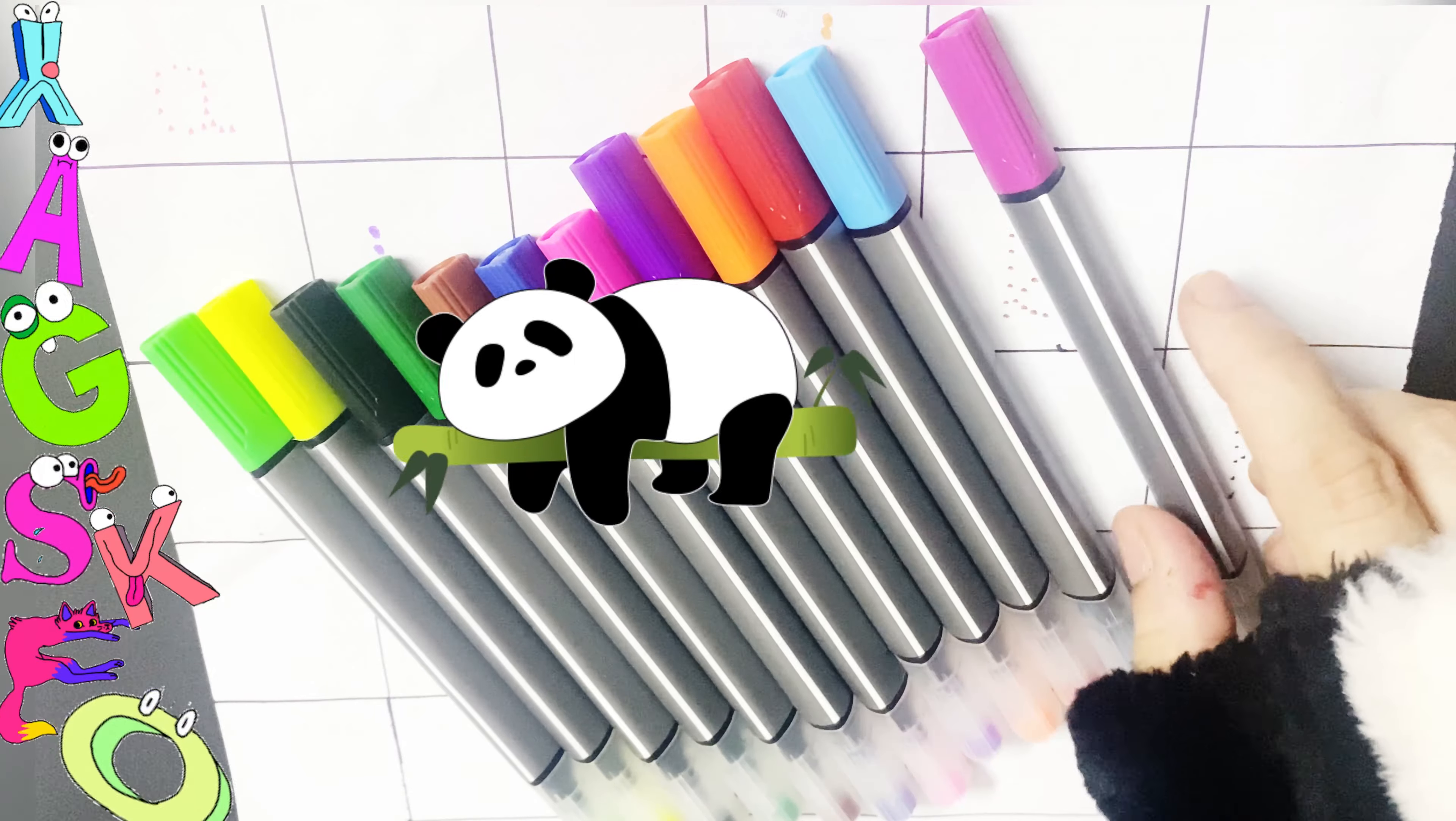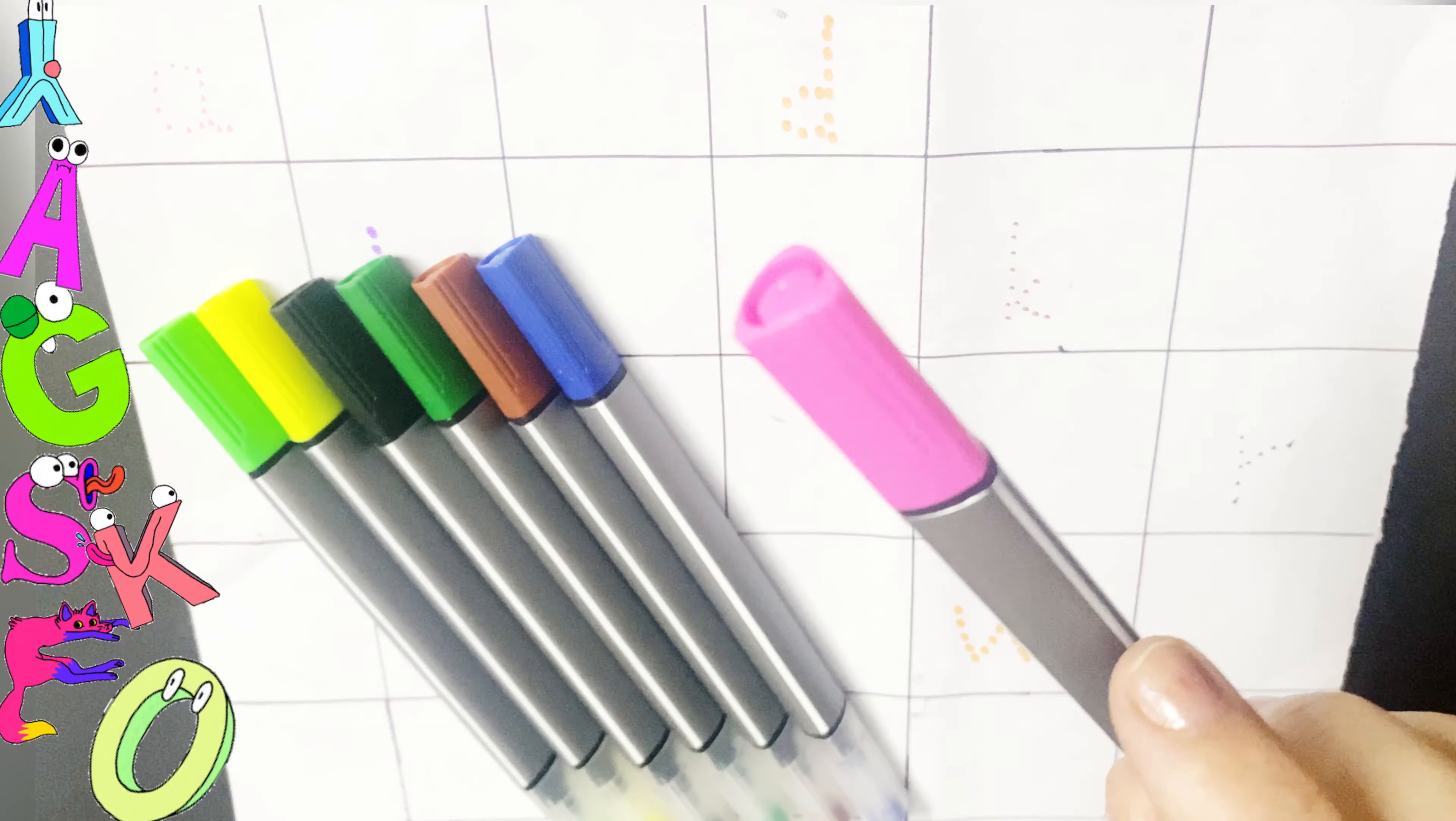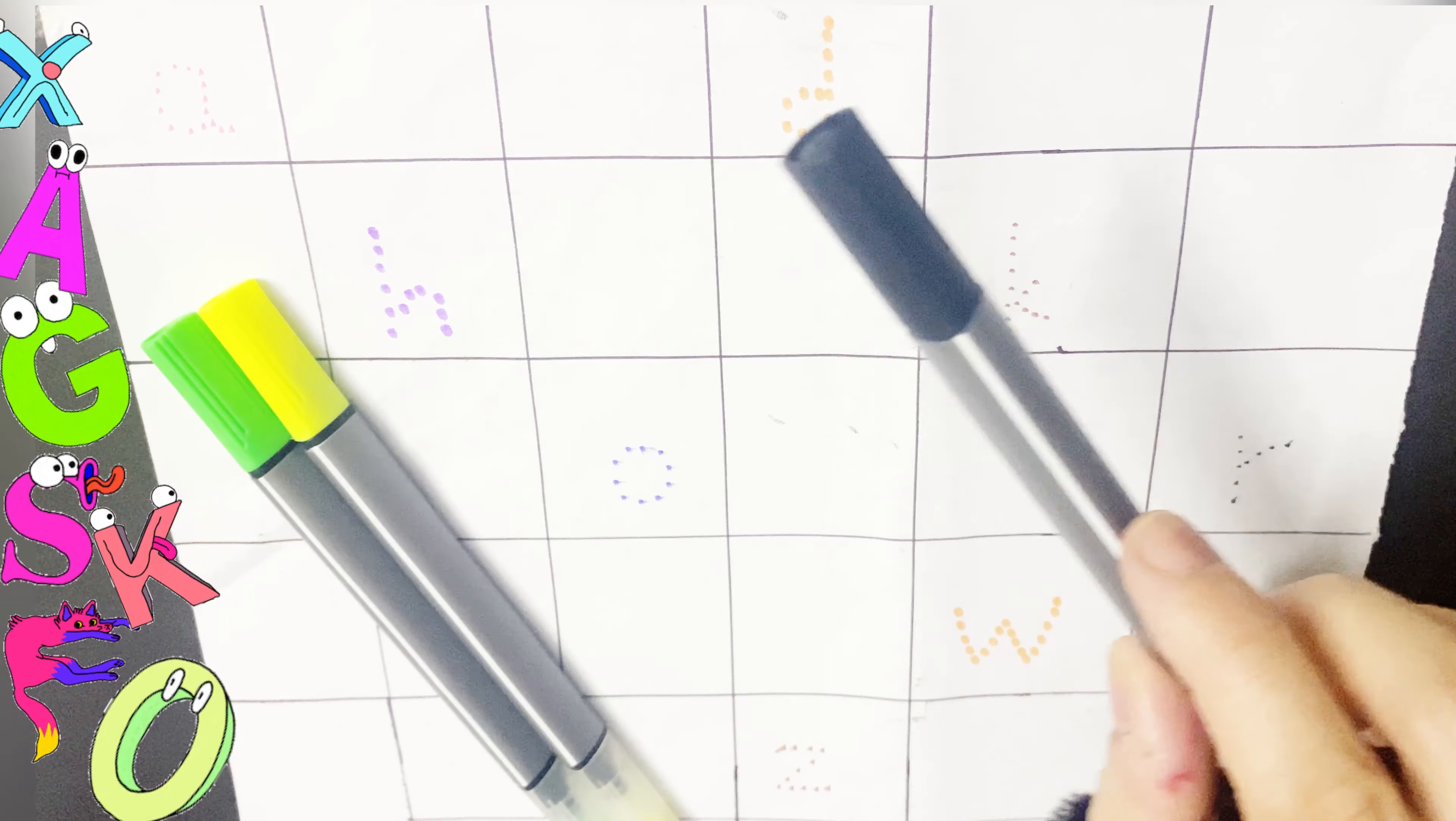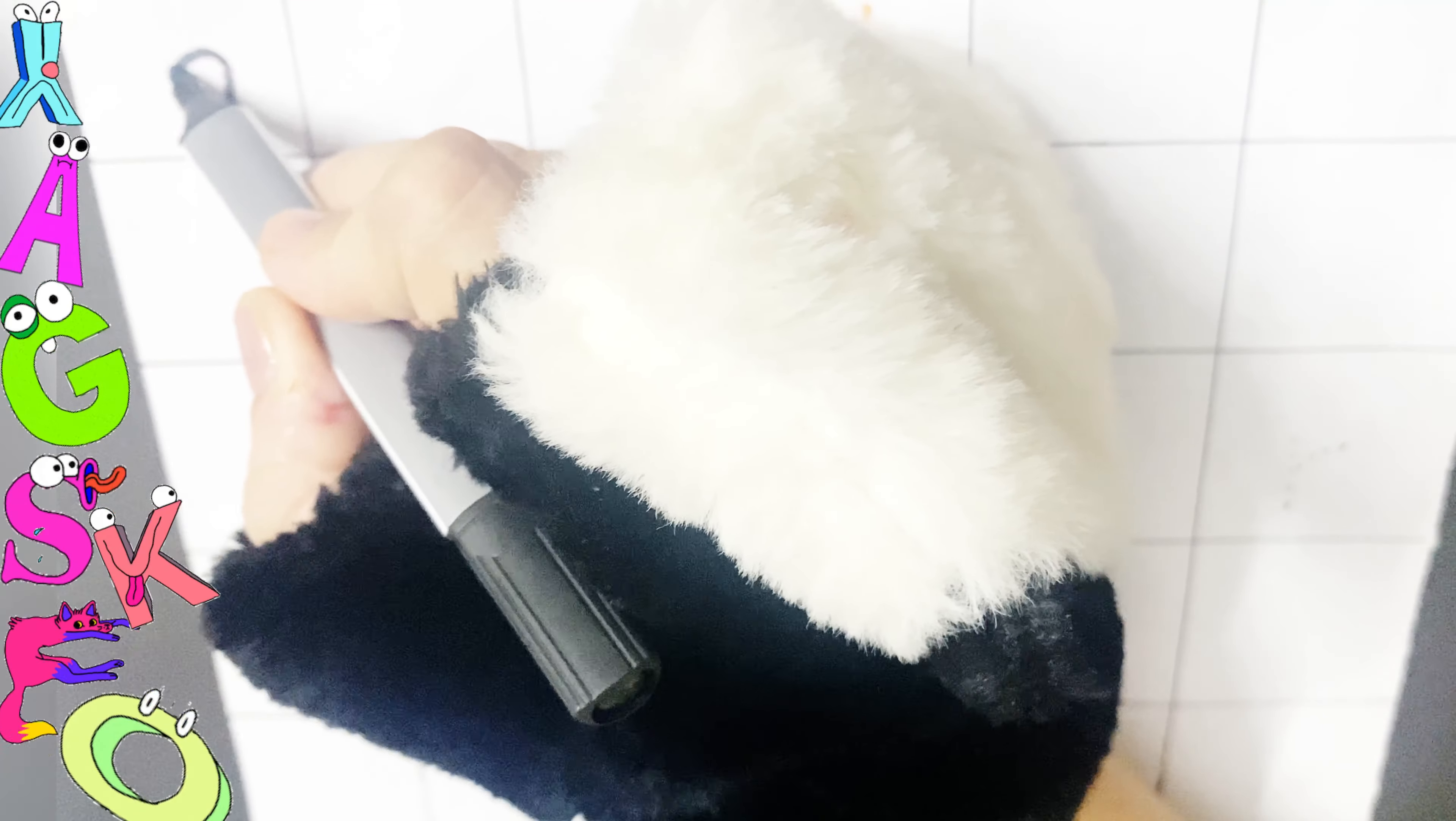Let's learn the colors first. Magenta color, light blue color, red color, orange color, purple color, light pink color, dark blue color, brown color, dark green color, black color, yellow color, white green color. So let's start writing letters from A to Z.